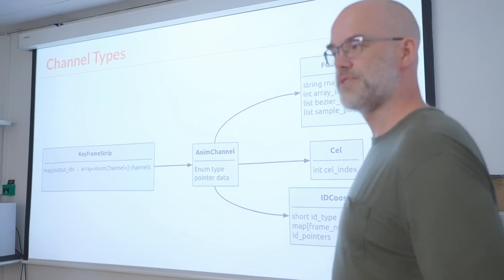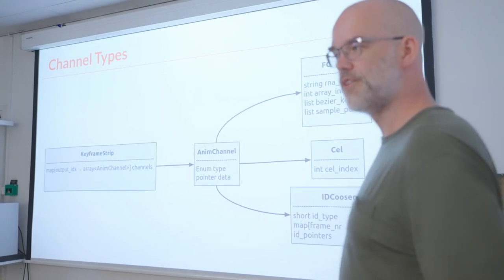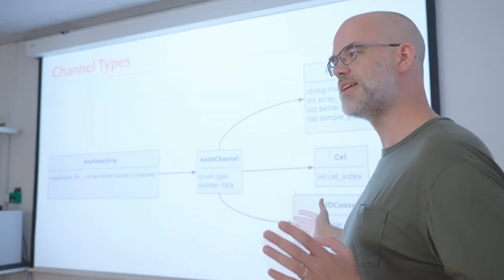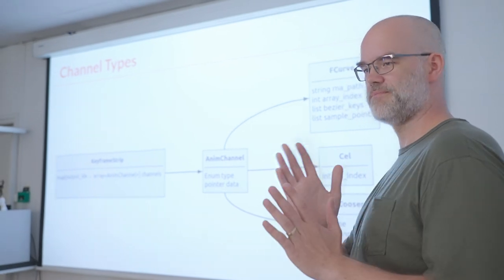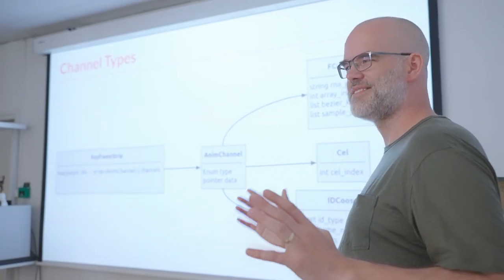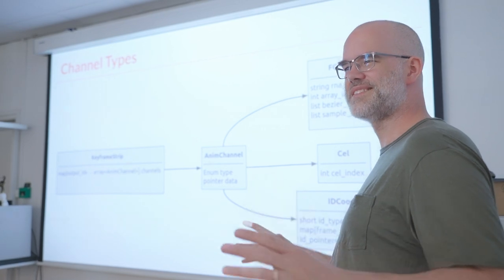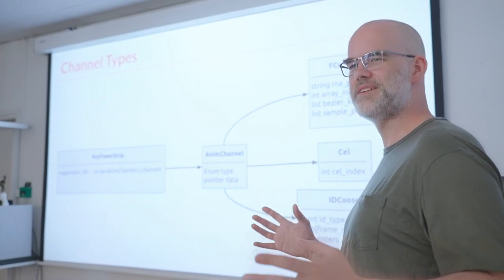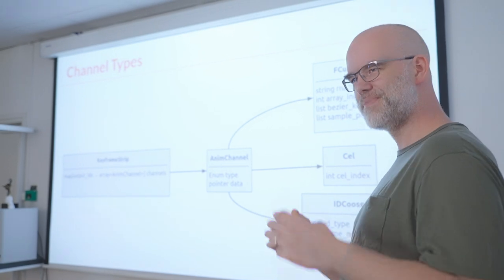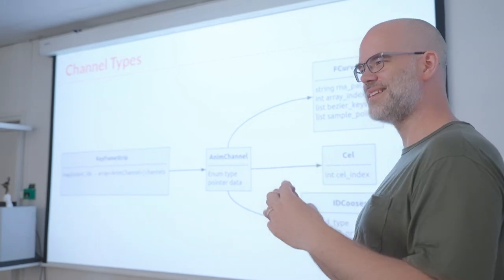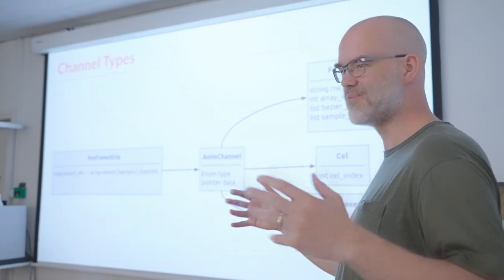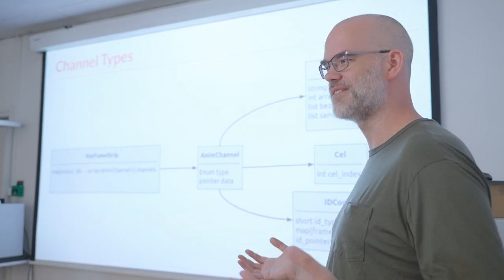We also want to have an ID chooser. Currently you can change the active scene camera with camera markers, but it's a very tacked-on system that doesn't integrate with the animation system at all. We just want to be able to animate changes in camera in the same way that you can animate other things.